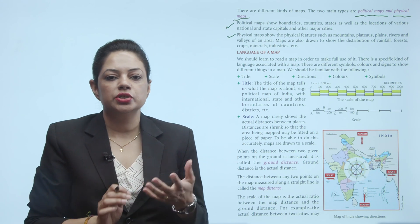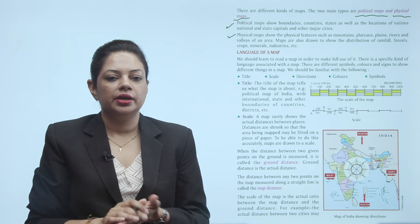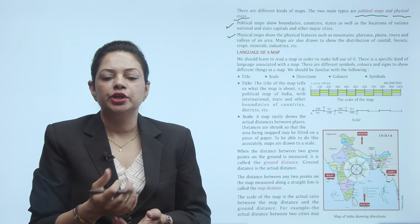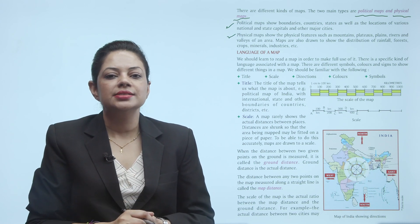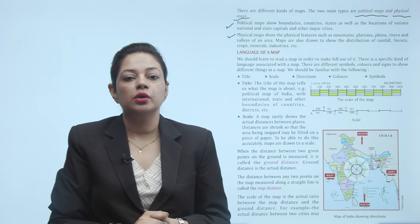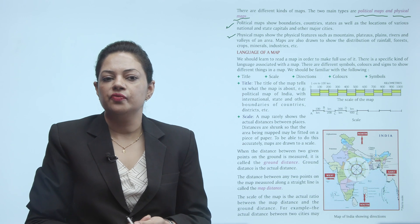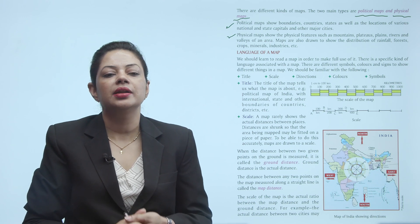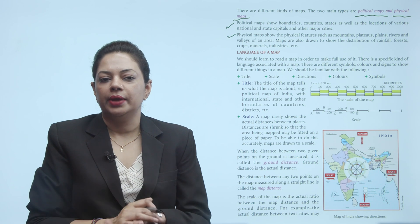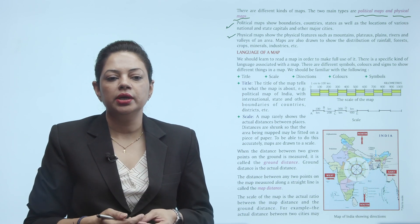Physical maps show physical features such as mountains, plateaus, plains, rivers and valleys of an area. Maps are also drawn to show the distribution of rainfall, forests, crops, minerals, industries, etc. Yeh sab physical map ki category mein aate hain.